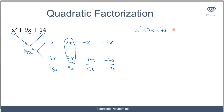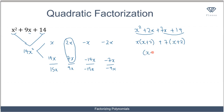Now I have x squared plus 2x plus 7x plus 14. Consider the first two terms and the last two terms separately. x is common to the first two terms, leaving x plus 2. Then 7 is common to the last two terms, also leaving x plus 2. Since the bracketed expressions match, pick one — x plus 2 — and multiply by what remains: x plus 7. The factorized result is (x + 2)(x + 7).